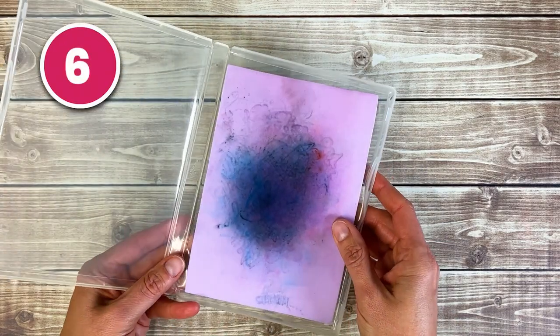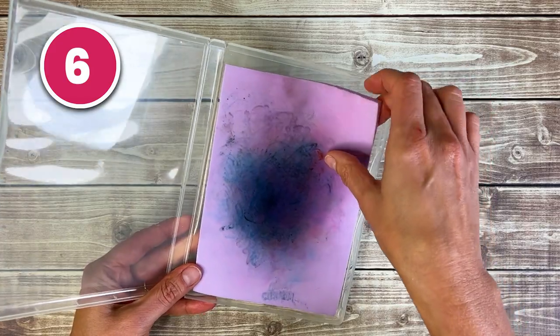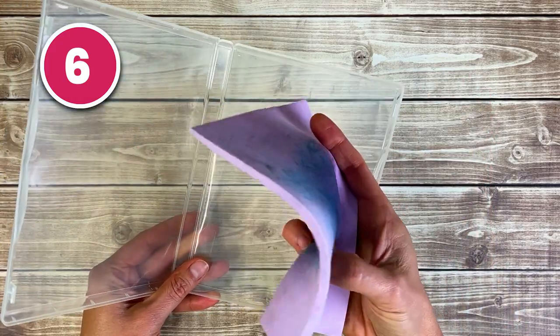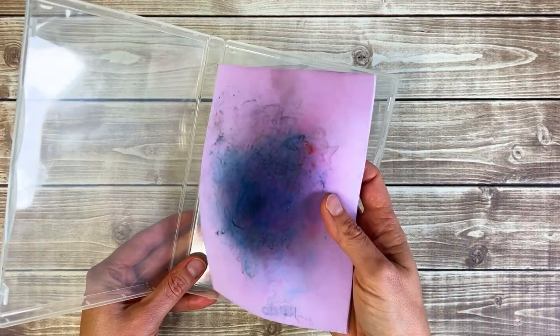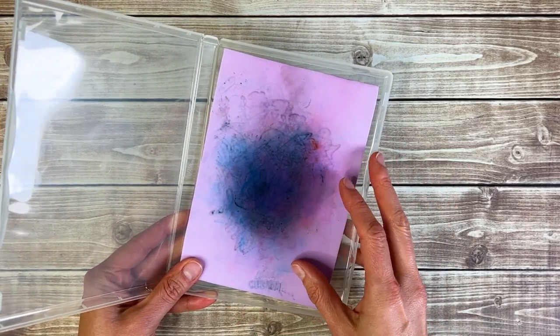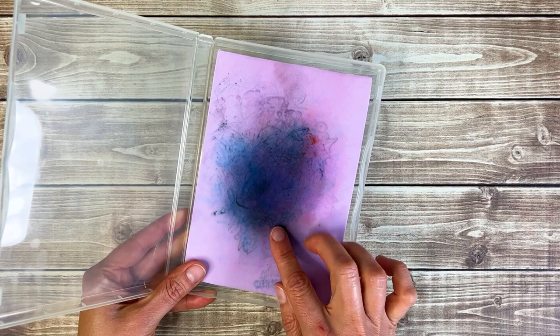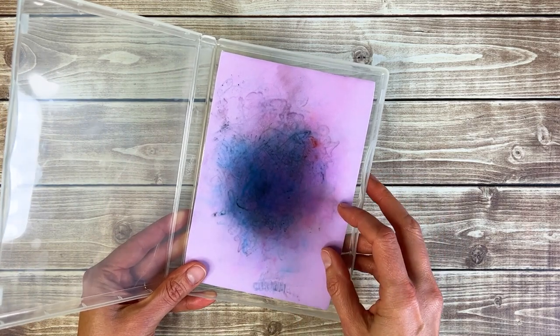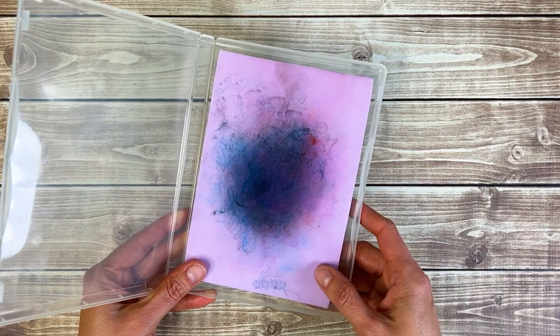The number six tool is the Simply Shammy. This can be used to clean your stamps. It starts out as a light purple and then you get it wet and then you can just wipe your stamps right off on it. You can rinse it off in between uses so you can get the extra ink out and then it's perfectly good to use again.